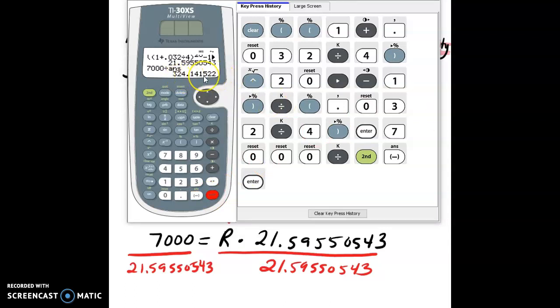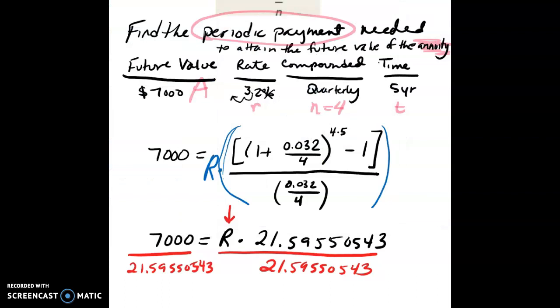And now I want to round this to the nearest cent. So the nearest cent is right here. Look one over, less than 5, keep this the same, and just get rid of those digits to the right. So here, my periodic payment would be $324.14.